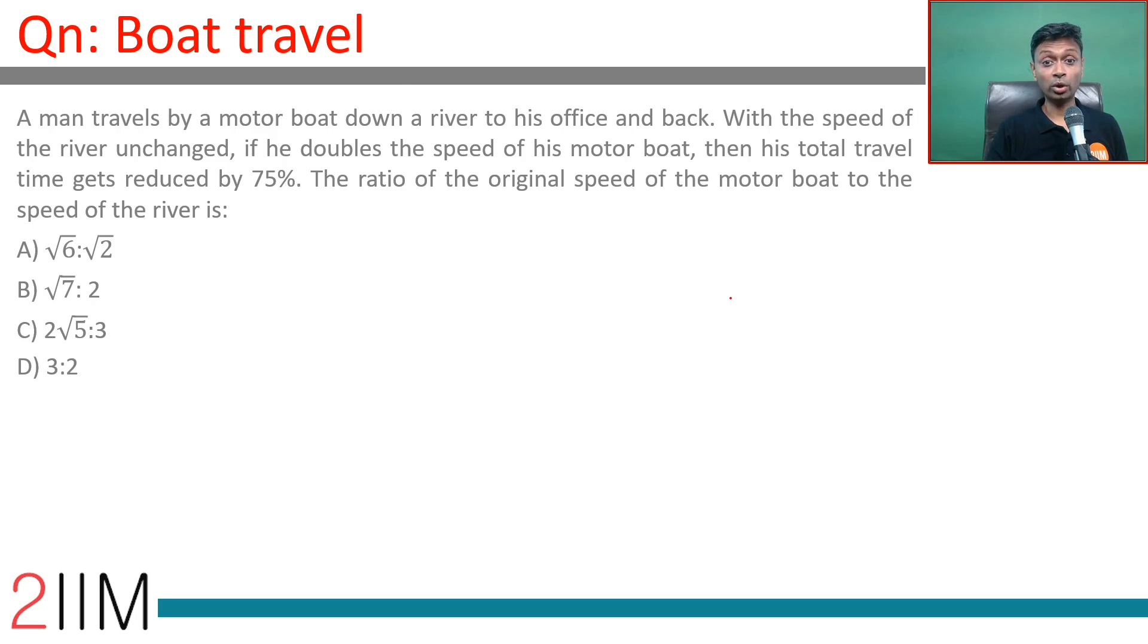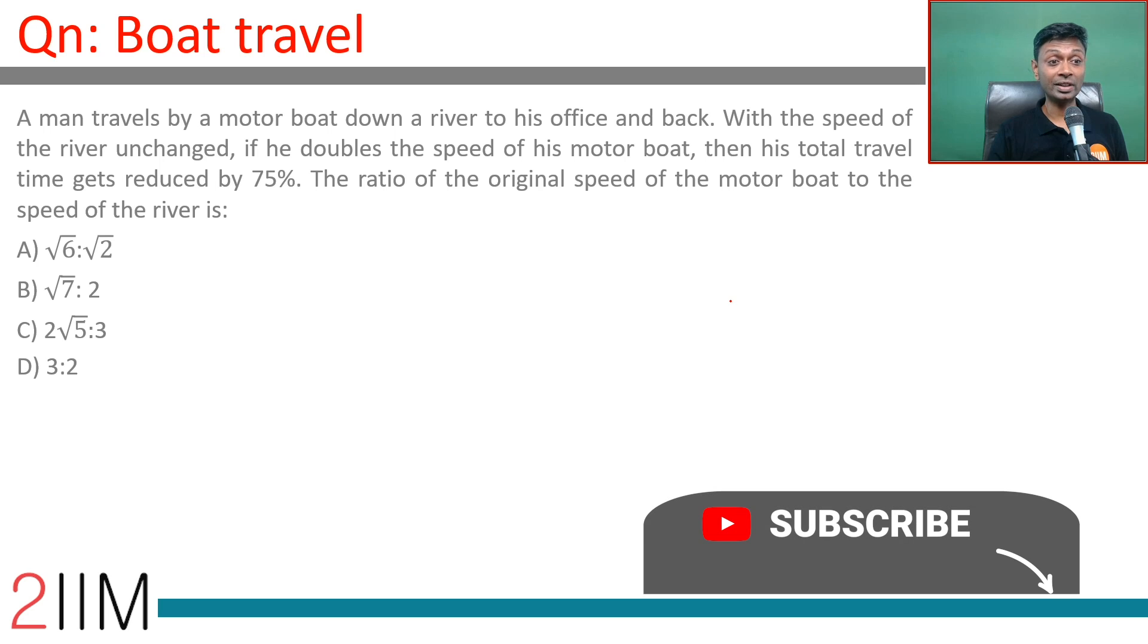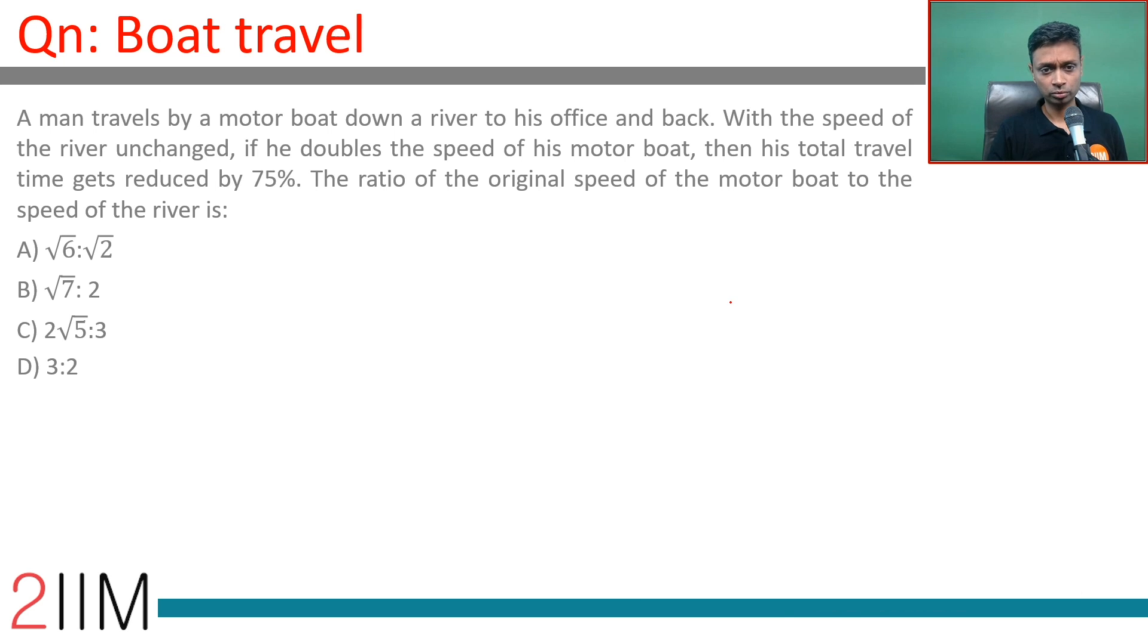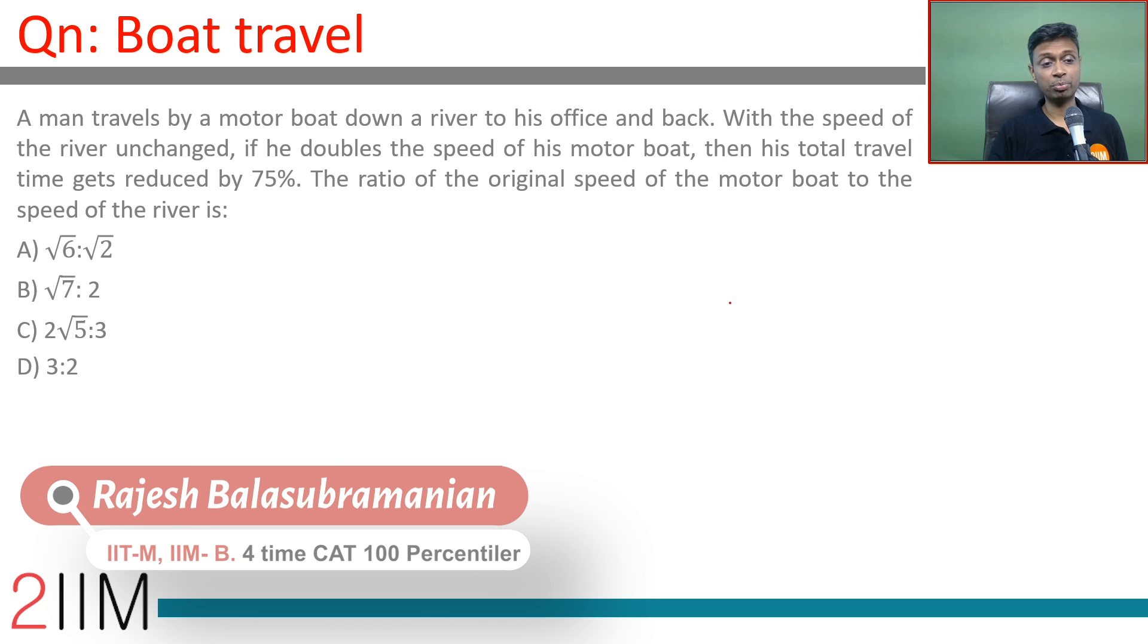A man travels by a motorboat down a river to his office and back. With the speed of the river unchanged, if he doubles the speed of his motorboat, then his total travel time gets reduced by 75%. The ratio of original speed of the motorboat to the speed of the river is: